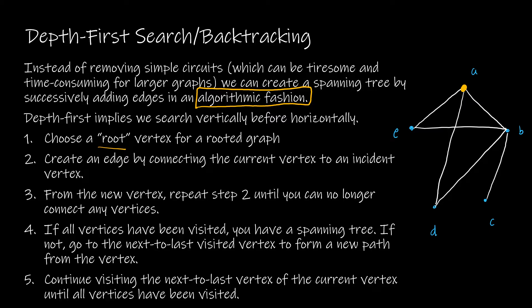The next step says create an edge by connecting the current vertex to an incident vertex. So if you have edges that are labeled in an ordered fashion, for instance we have the alphabet, and if we wanted to connect these in alphabetical order, I would choose B over E. So I would examine from A that I could connect either E or D or B, because those are all the vertices that are connected to A.